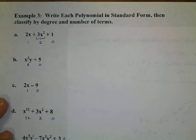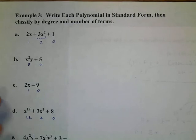In example 3, we're writing each polynomial in standard form and then classifying it by degree and the number of terms. What is standard form? That's the first question we have to ask. Well, standard form, very simply, is writing everything with a decreasing degree.